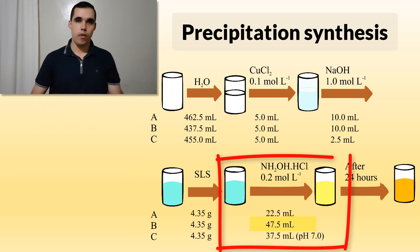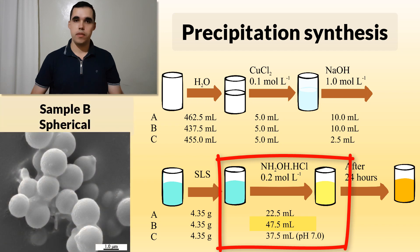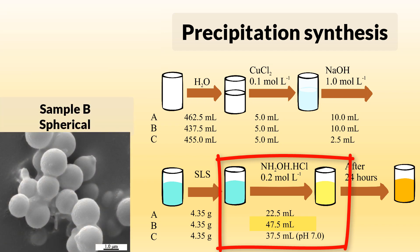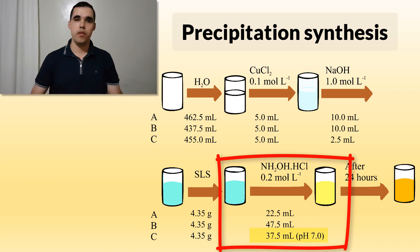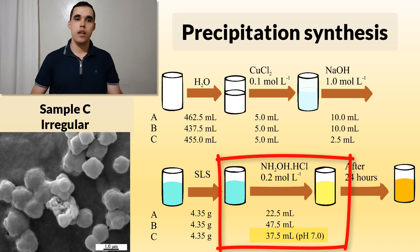And for a large amount, it was spherical, sample B. The pH adjustment on the precursor solution leads to not-defined morphologies, sample C.